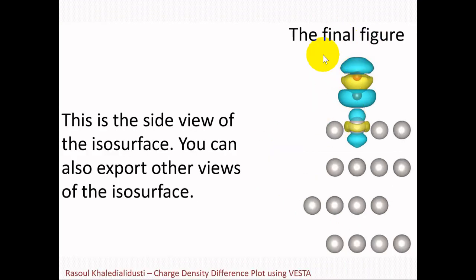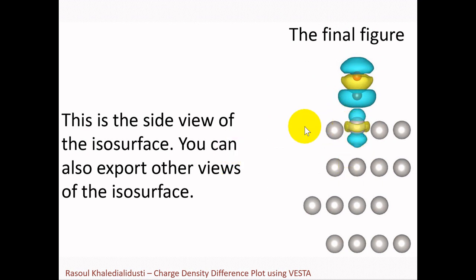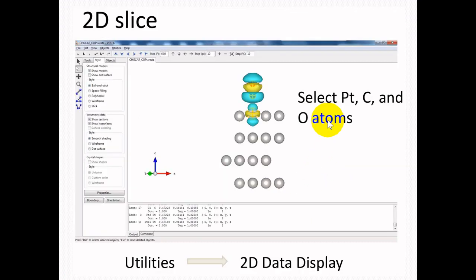Now we have the final figure of the charge density plot of carbon monoxide adsorbed on the Platinum surface. This is a side view of the isosurface, and we can always export other views of the isosurface by rotating the surface and structure in VESTA.